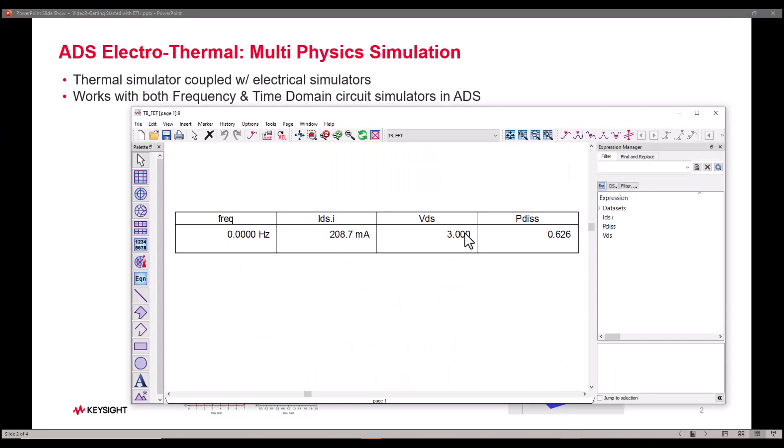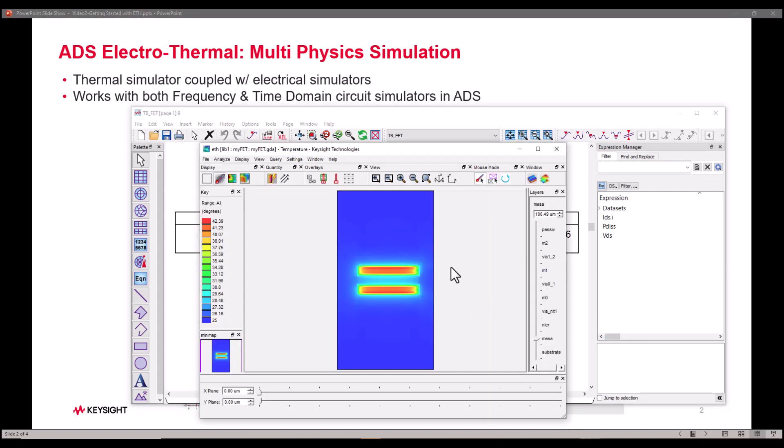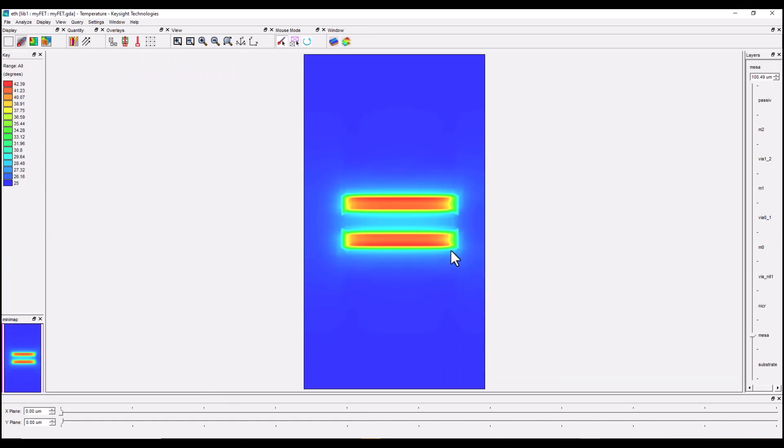And along with the circuit simulation result you also now have this thermal viewer which is showing you the thermal profile of the chip. And in this case it was a very simplistic one FET and you can see a couple of heat sources. Here is the gradient information and the temperature readout for you to understand.